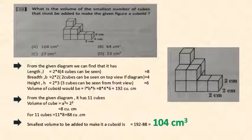In this question they have asked what is the volume of smallest number of cubes that must be added to make the given figure a cuboid. Let us assume the number of cubes being given and the number of cubes to be added to make it a cuboid. Based on the number of cubes and the image given we can take the length, breadth and height which I have taken which is equal to 8, 4 and 6. You can see the statement. The next one is finding the volume of a cube. So particular cube is 2 cm. 2 cube is equal to 8 cubic cm. Next we have to find how many number of cubes are present which is equal to 11. So 11 into 8 is equal to 88 cubic cm. From the first and the second statement we are finding the smallest volume to be added to make it a cuboid. Which is nothing but 192 minus 88 which is 104 cm cube.